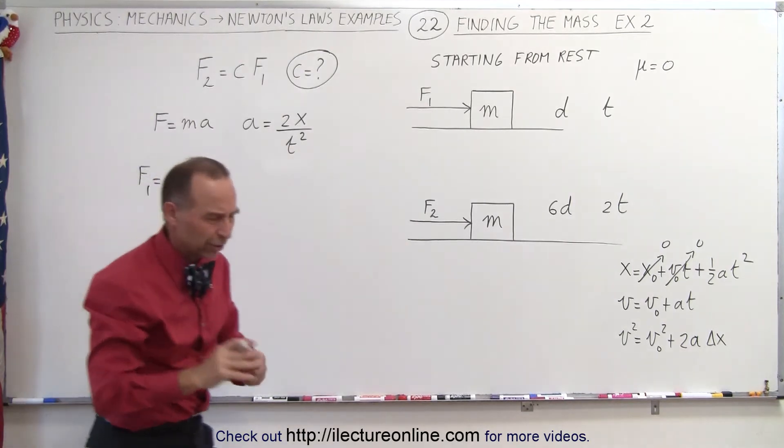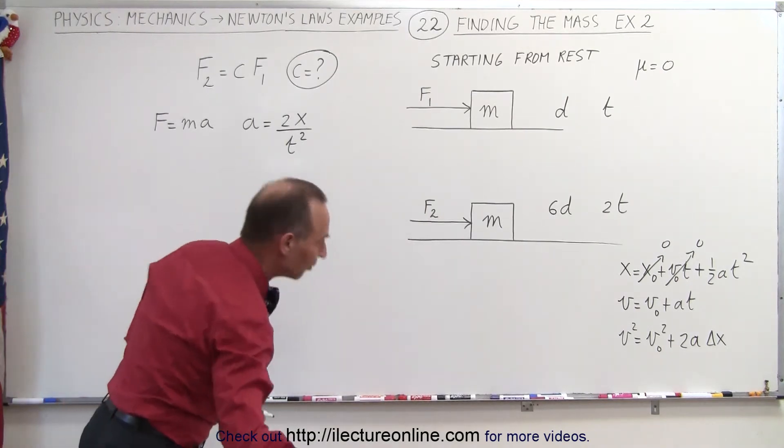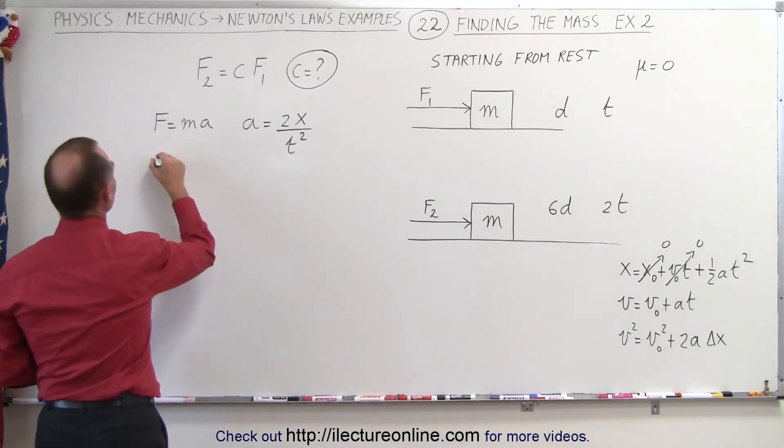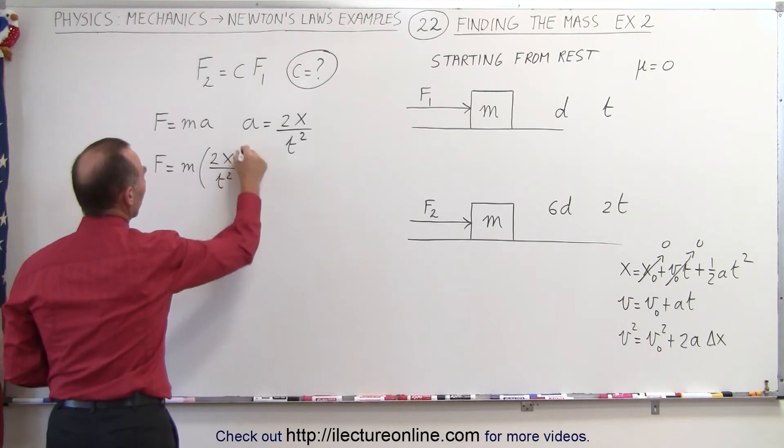Well let me write in the general case first. I may make it easier for everybody to see. So first let's do this in the general case. So we can write that f is equal to the mass times acceleration, which can be written as twice the distance divided by the time squared.